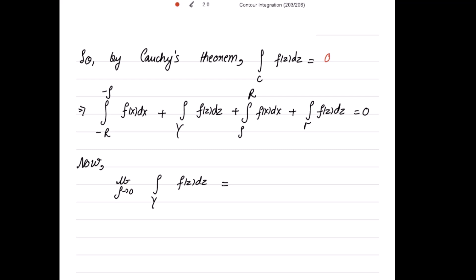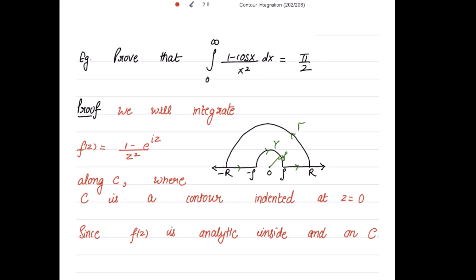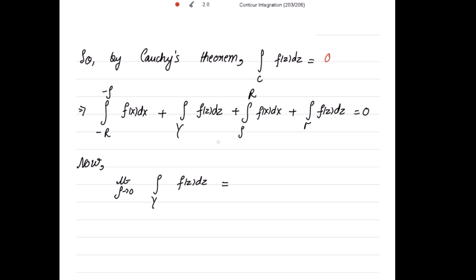Now let's split C into its parts. Looking at the contour: first along the real axis from -R to -ρ, then along the small semicircle gamma of radius ρ, then from ρ to R, and then along the large semicircle tau in the upper half plane. We have four integrals. The integral along tau will be 0 by Jordan's lemma. We will merge the two real-axis integrals after letting ρ → 0 and R → ∞.